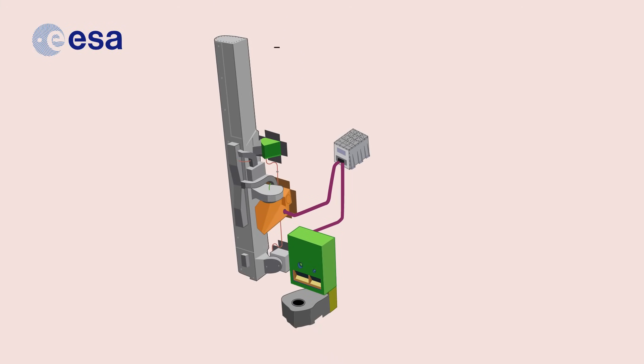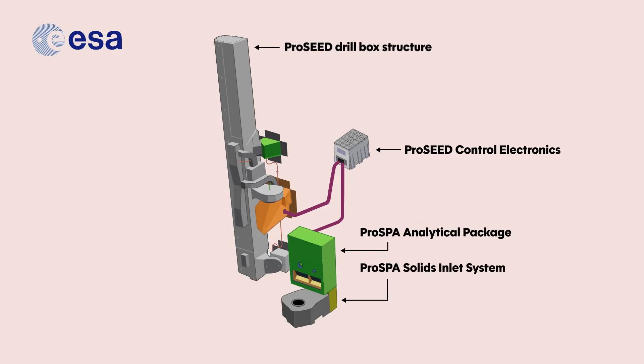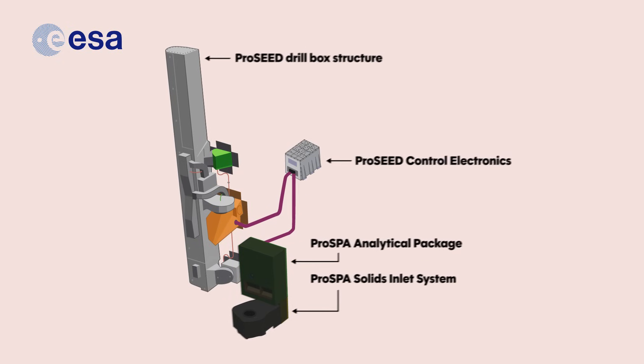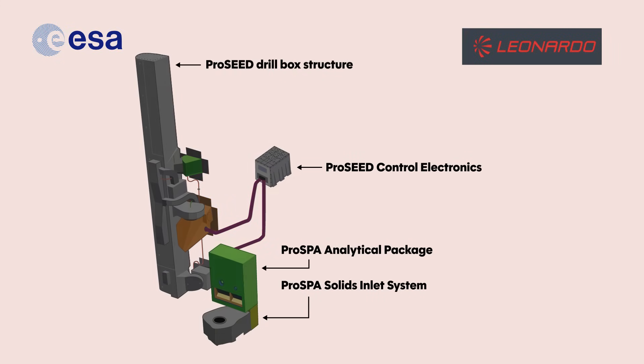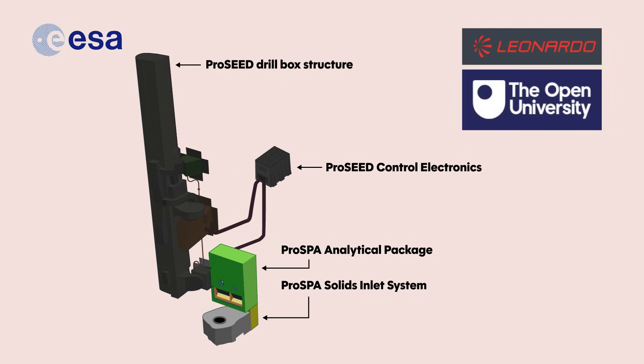Developed by an international industrial and academic team led by ESA, Prospect could soon enable researchers to make strides in our understanding of the Moon's natural resources. It features two key elements: a drill capable of sampling icy regolith named Prosseed, provided by Leonardo SPA in Italy, and a sophisticated instrument package named Prospa, developed by the Open University in the UK.